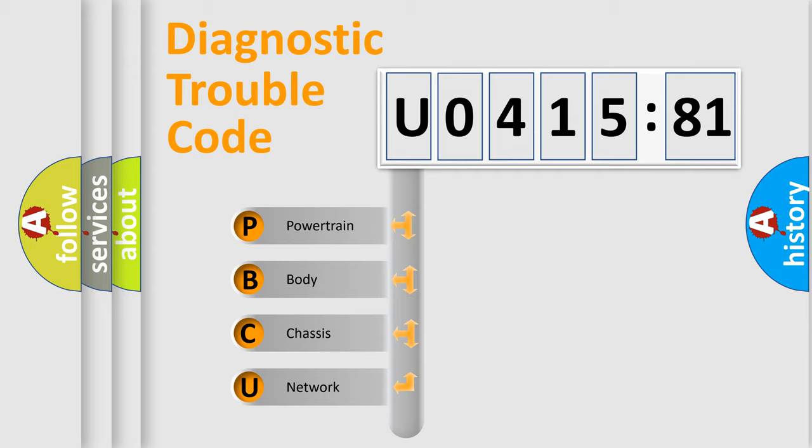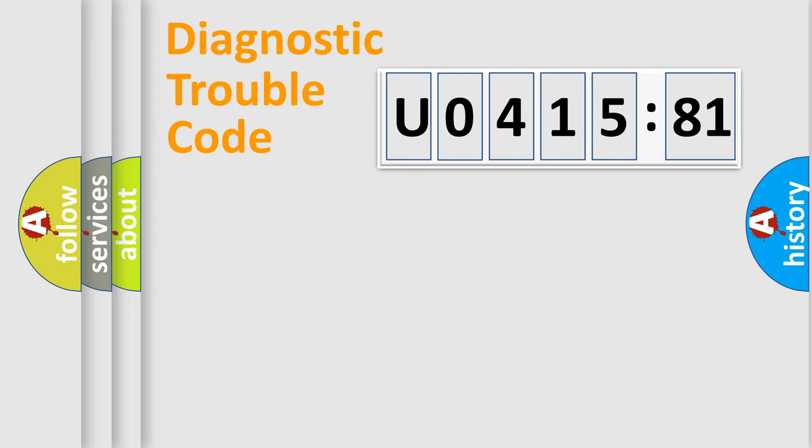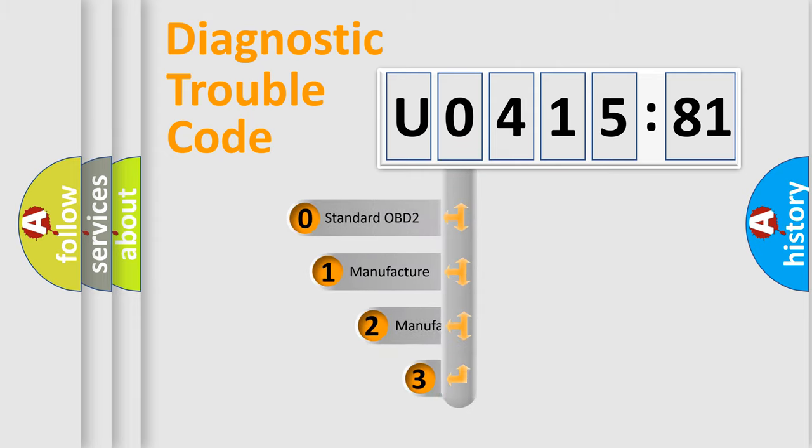We divide the electric system of automobile into four basic units: Powertrain, Body, Chassis, and Network. This distribution is defined in the first character code.